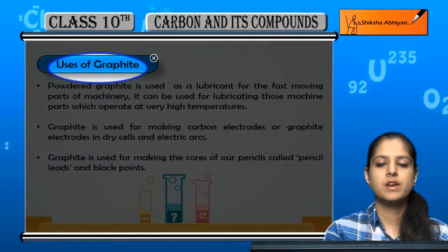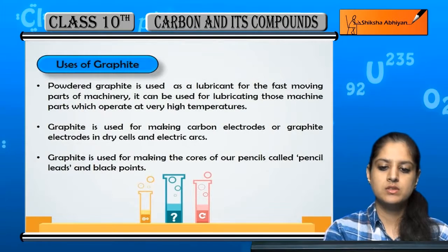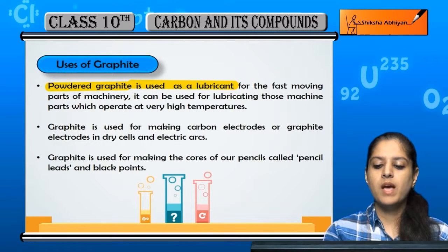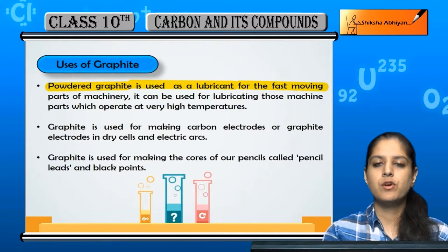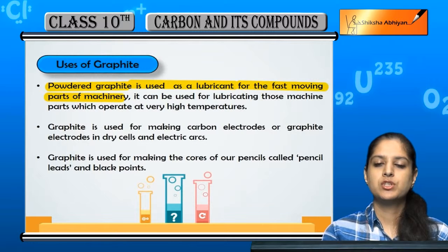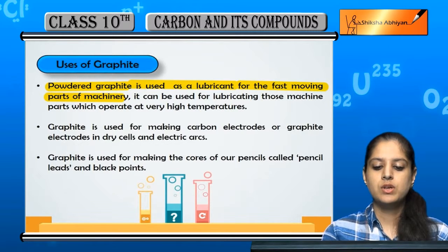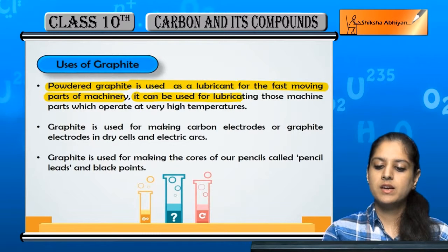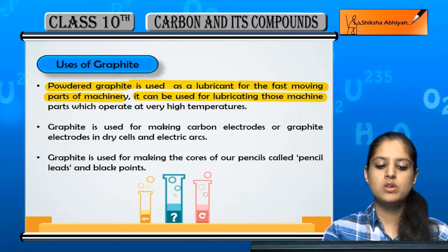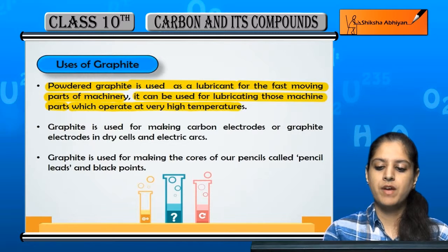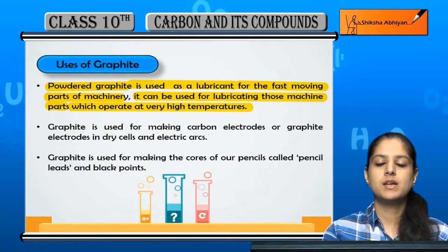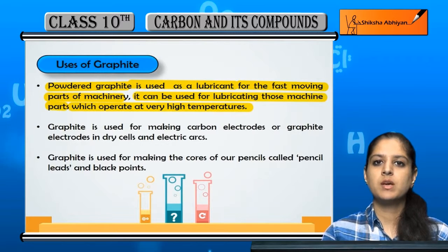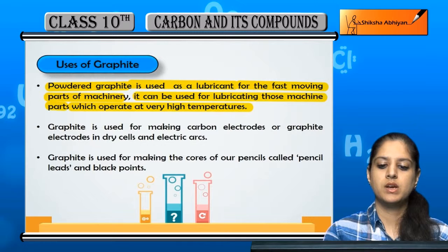The uses of graphite: powdered graphite is used as a lubricant for the fast-moving parts of machinery. It can also be used for lubricating machine parts that operate at very high temperatures, because the melting point of graphite is high, so even at high temperatures we can use graphite as a lubricant.